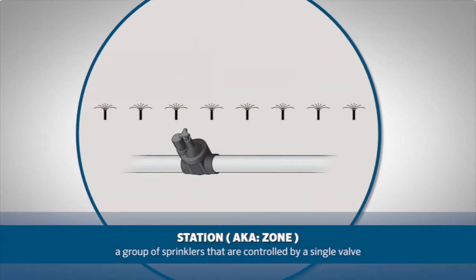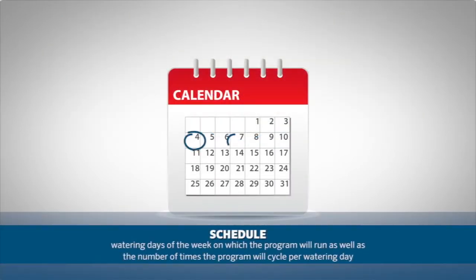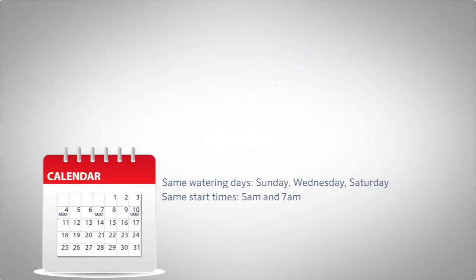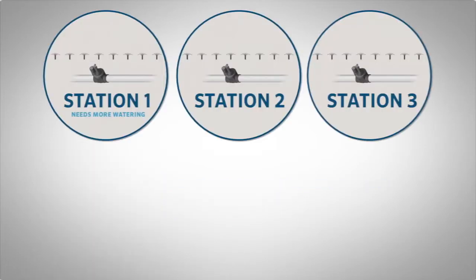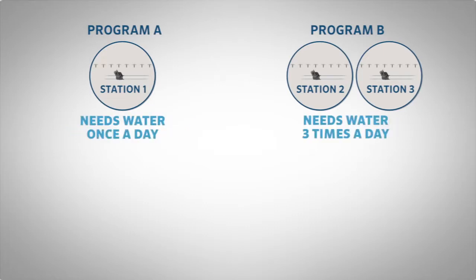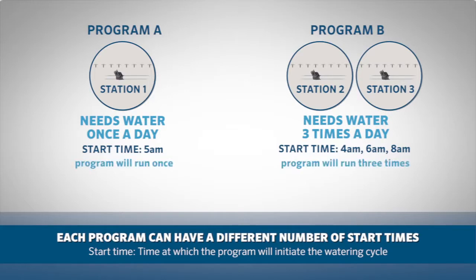Before going over the watering schedule, let's review some terminology. A station is a group of sprinklers controlled by a single valve, also known as a zone. A program is a group of stations that share the same watering schedule — meaning the watering days and the number of times the program cycles per watering day. If all your stations water on the same days and the same number of times, you can program them in the same program. However, if some zones need to water more or less frequently, you'll need separate programs. The start time is the time at which the program initiates the watering cycle, and you can set multiple start times per program.